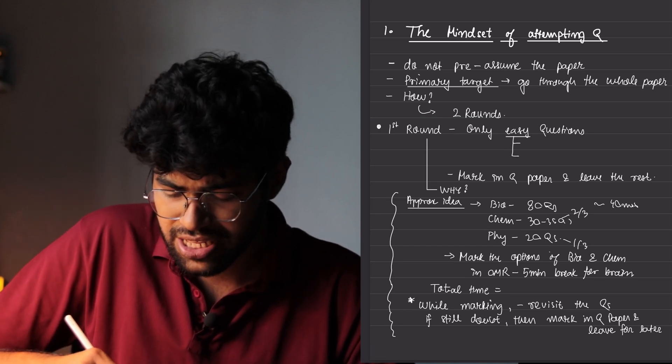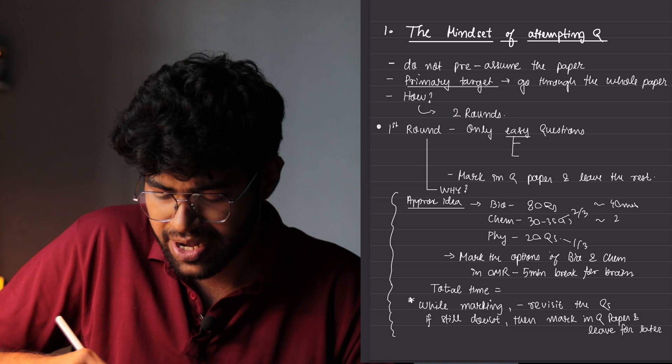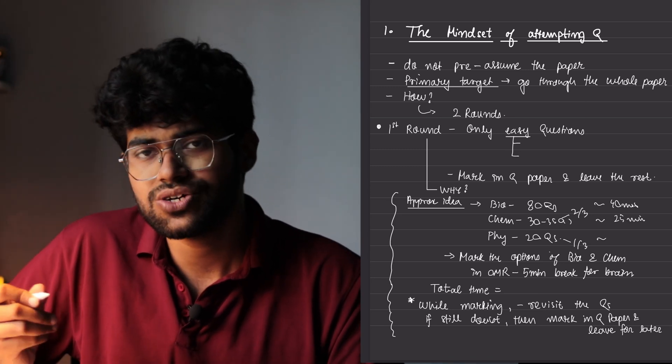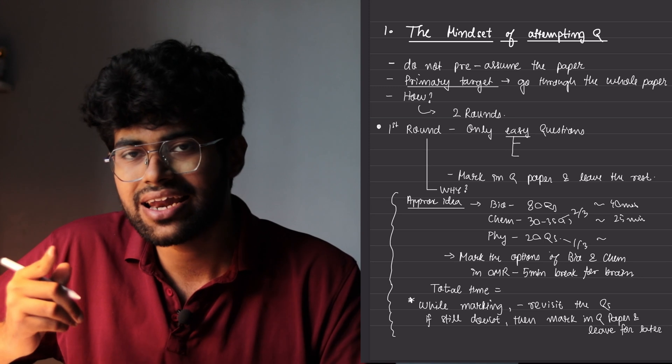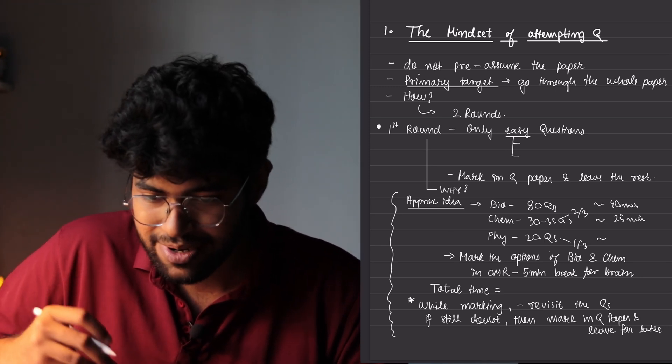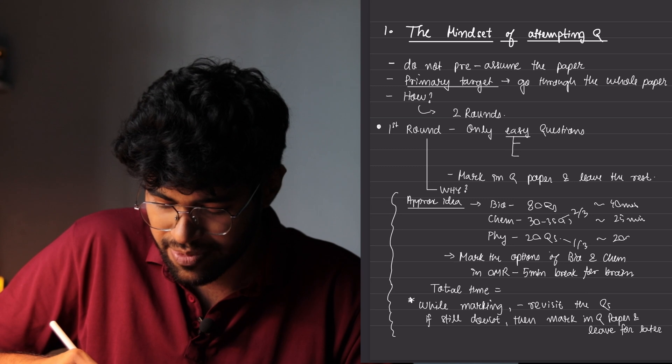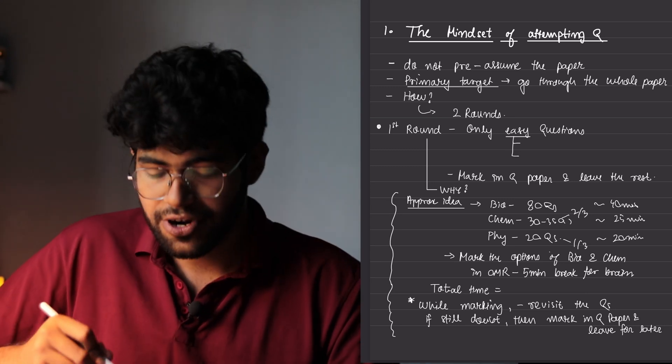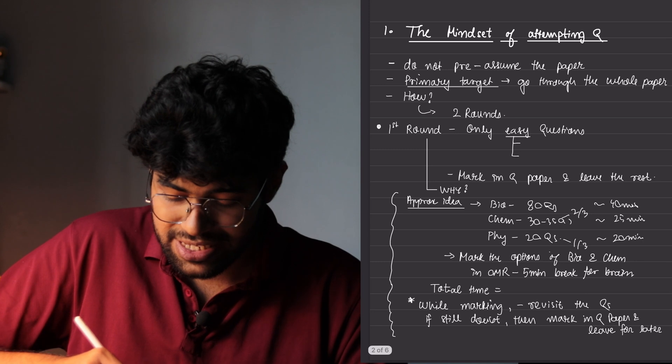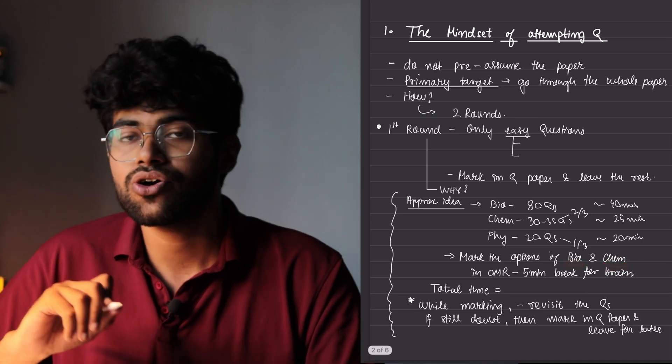Now, the approximate time that you will require is for 80 questions of biology, you must do it within 40 minutes. For chemistry, 30 to 35 questions, 25 minutes is more than enough. And for physics, 20 easy questions are like one liners that you don't have to pick up the pen to solve and they can easily be done within 20 minutes.